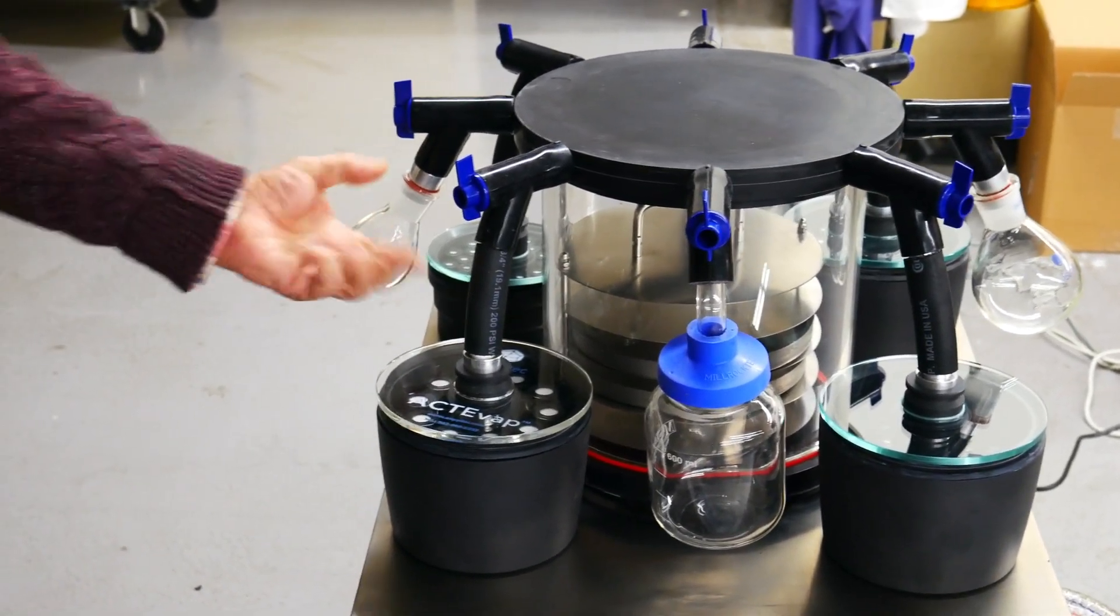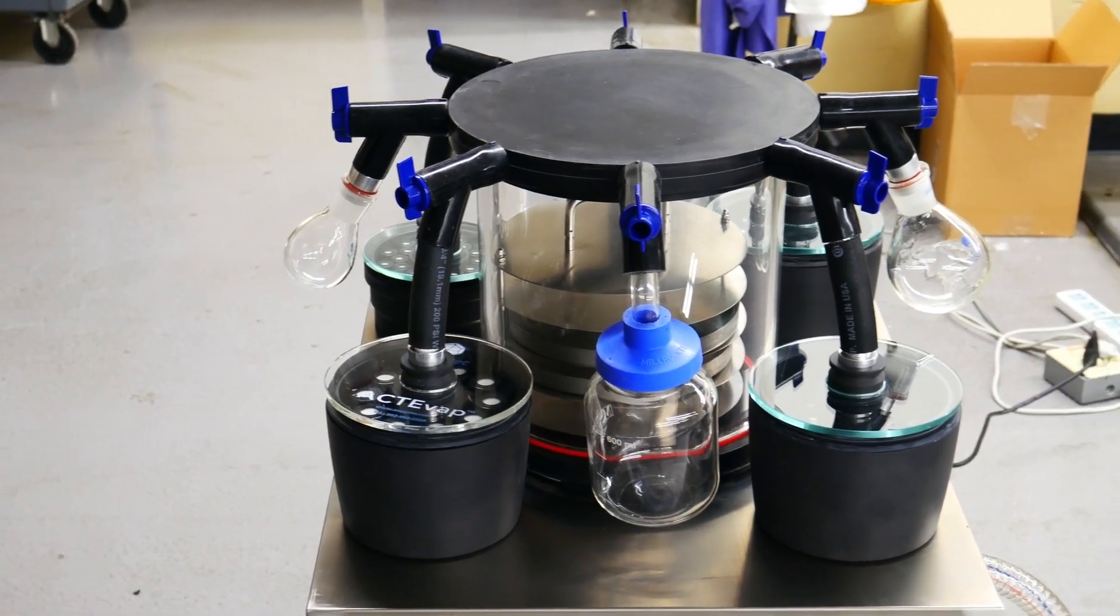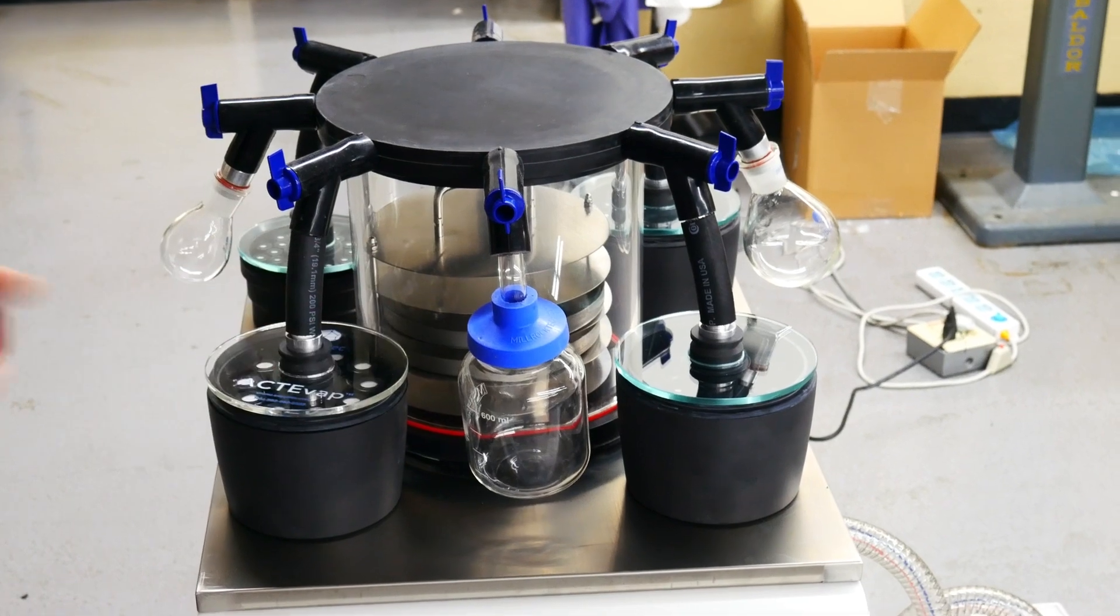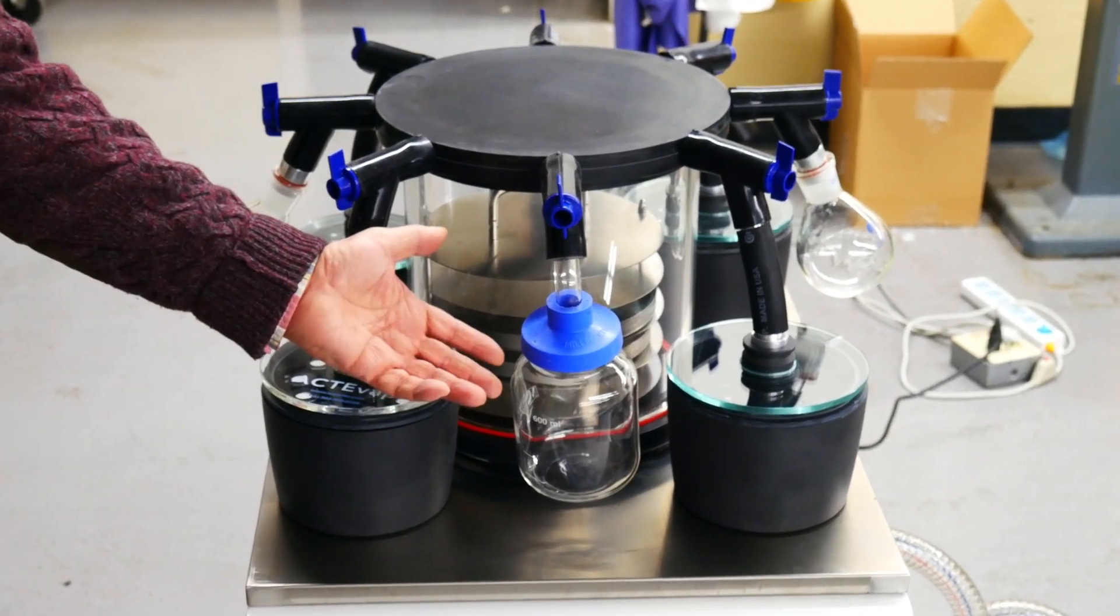You can use a regular flask for the freeze drying. It can be in the size of 1 liter, 2 liters, 1.5 liter, or in smaller flask sizes.